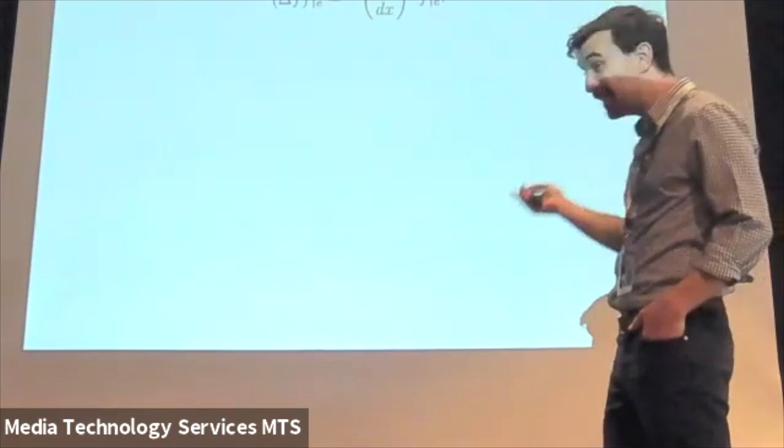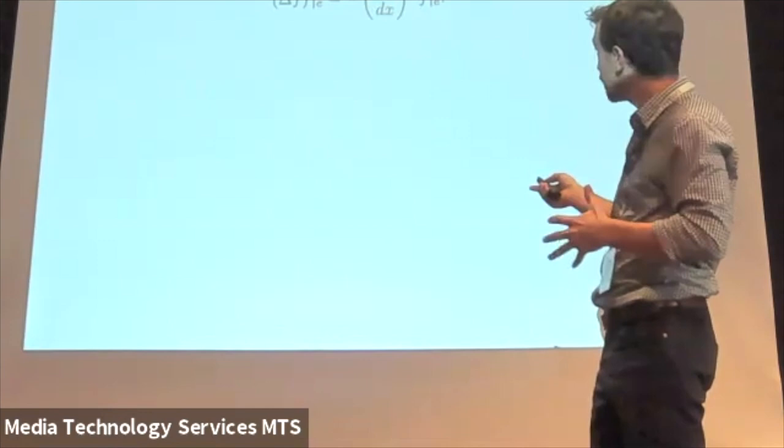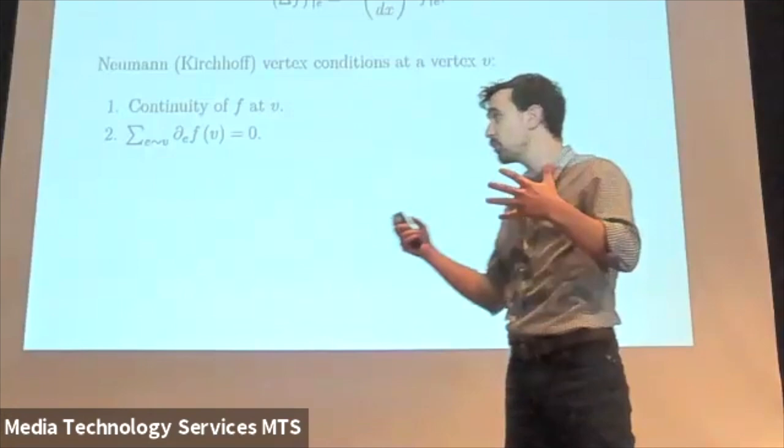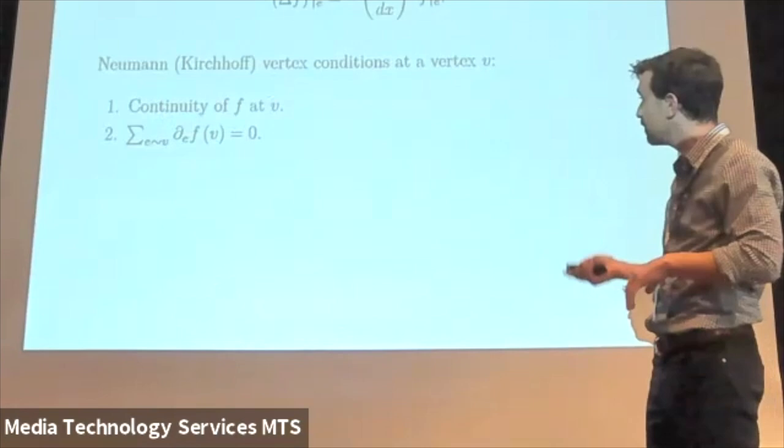So for metric graph, the Laplacian is not the adjacency matrix, but it's actually the differential operator defined edgewise. Edgewise on each edge is just minus the second derivative. And in order for that to be a self-adjoint operator, we need some kind of vertex conditions. We refine ourselves to a smaller set of functions, a space of functions. We're looking at functions which are continuous at every vertex and whose incoming derivatives sum up to zero.